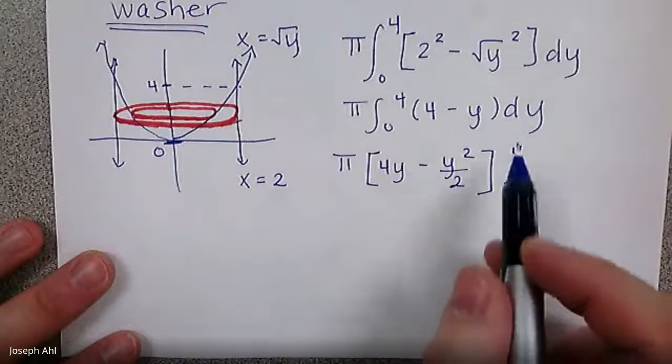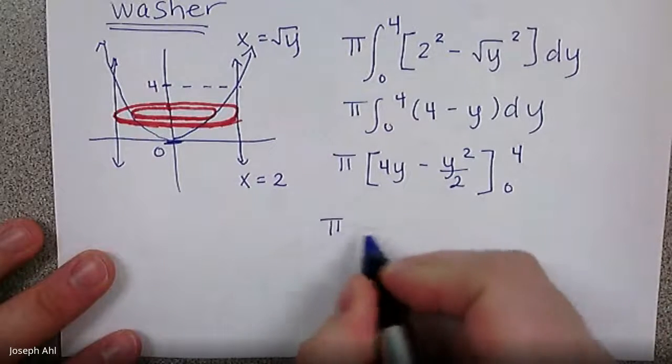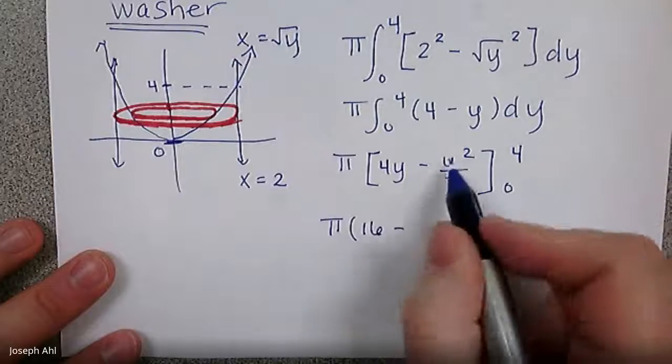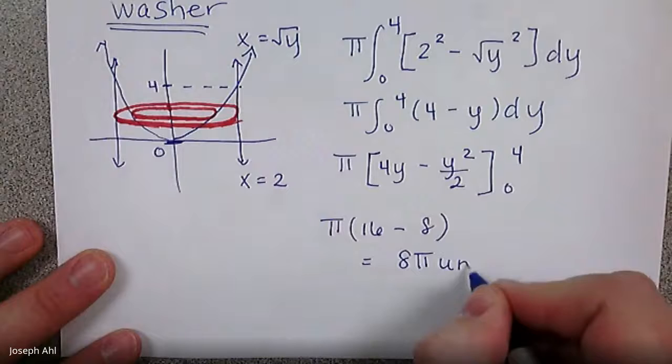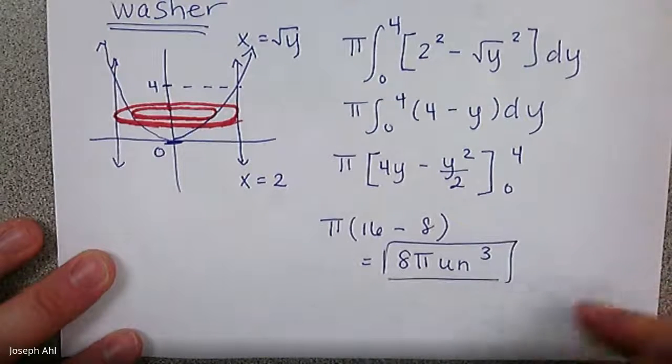So when I plug in 0, I know we're going to get 0 there. So just plug in the upper bounds. So 4 times 4 is going to be 16 minus 4 squared over 2 is 8. And lo and behold, we get 8π again, 8π cubic units there.